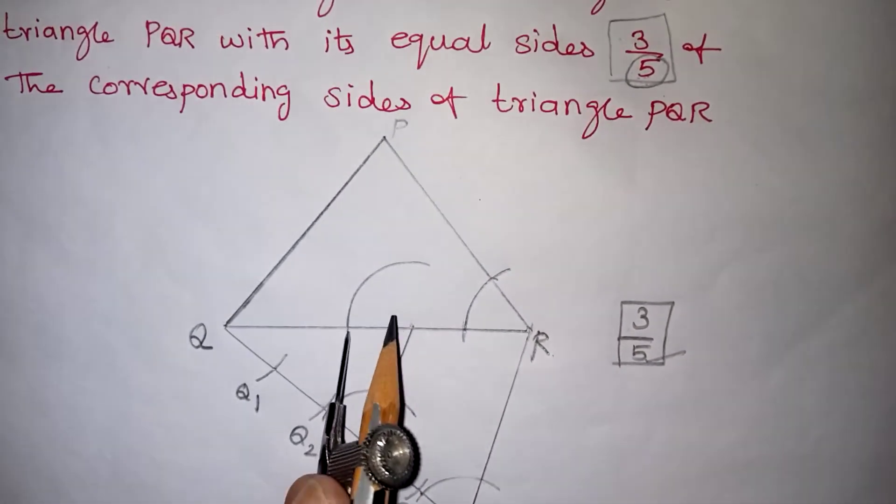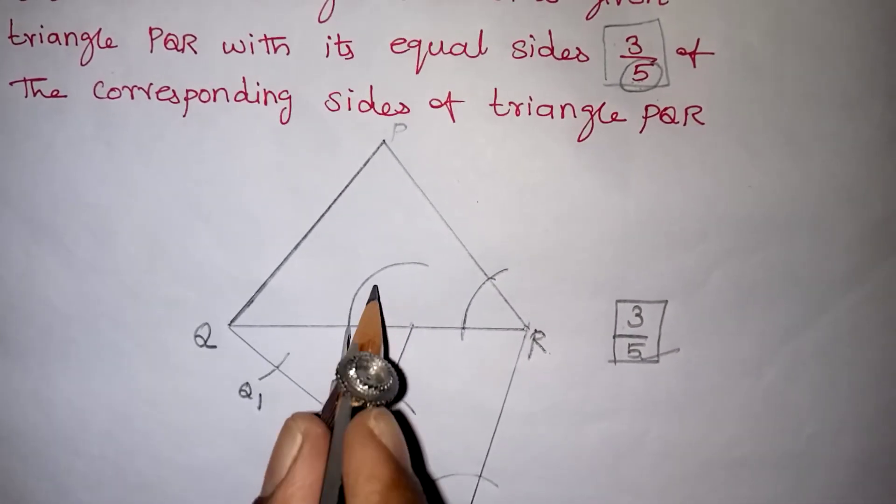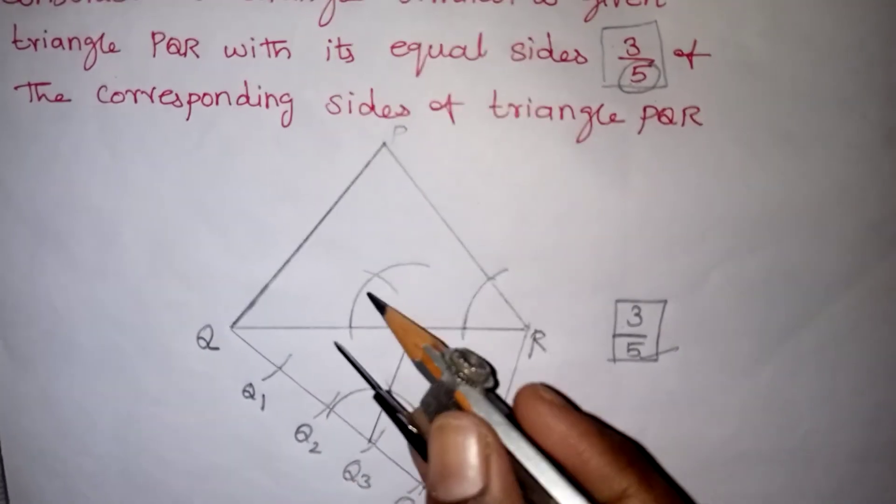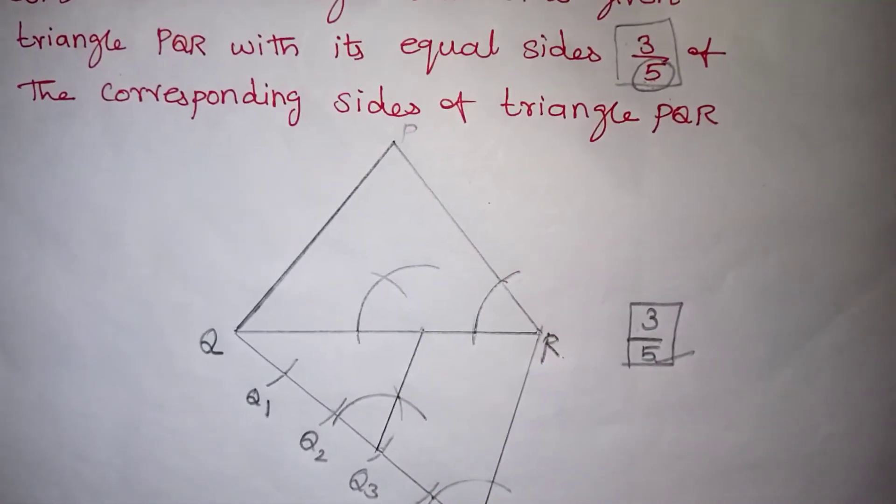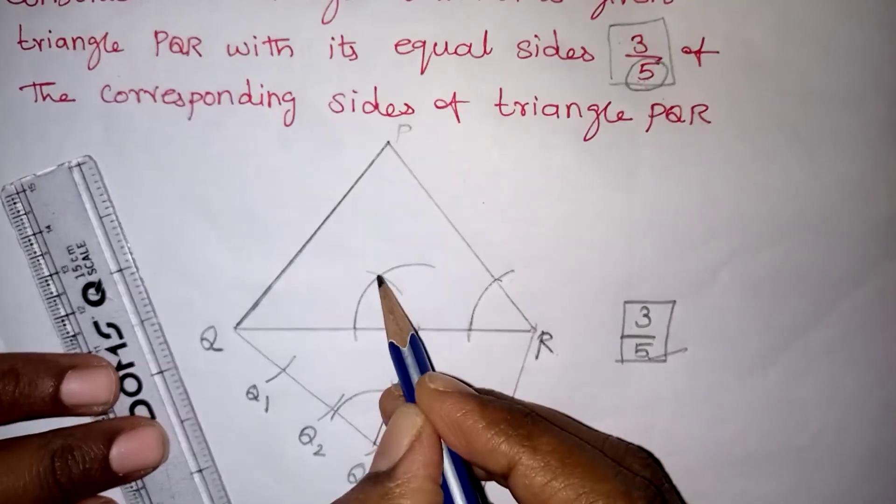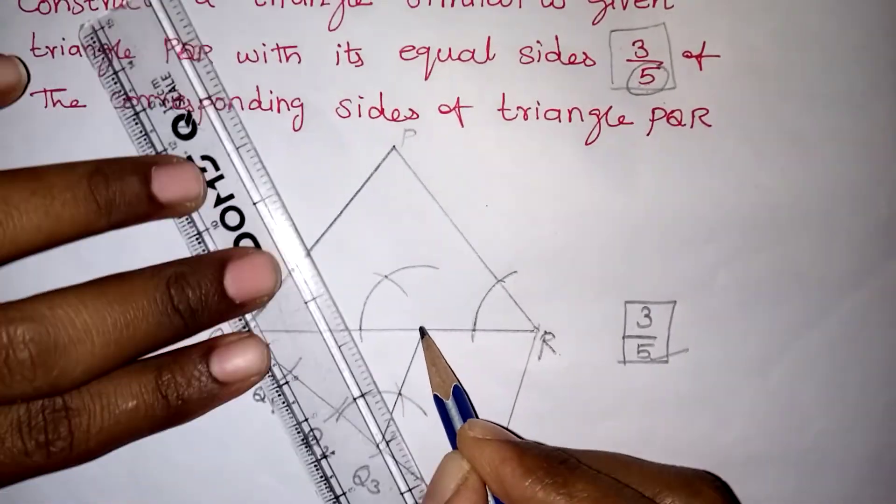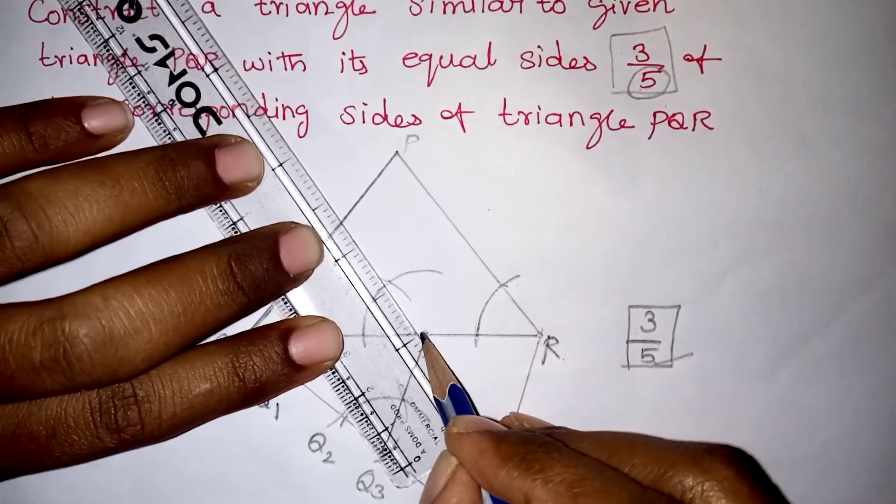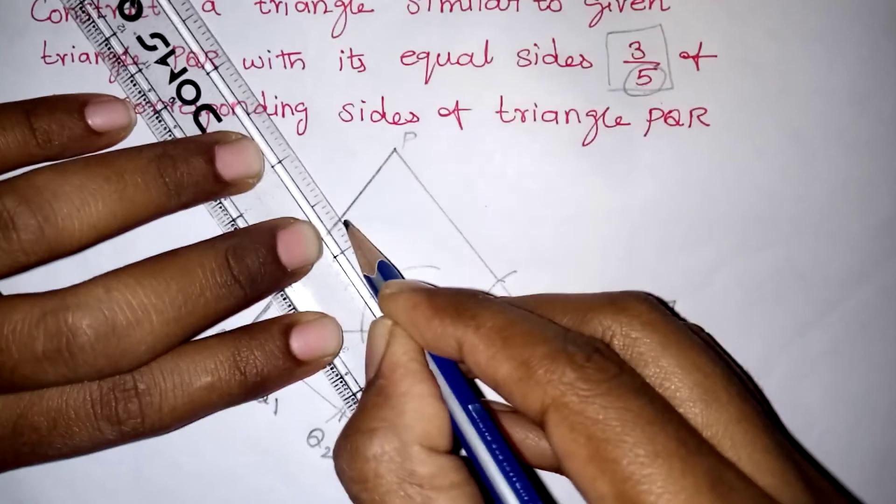After measuring, bring it. You will get a new point here. Just keep it here and cut the arc. From the same arc, we are cutting this in order to make these two angles equal. After cutting, you will be getting a point here. This point and this point should be joined to make a parallel line.